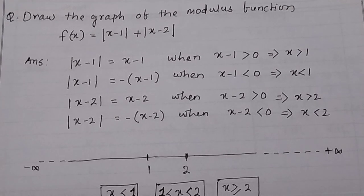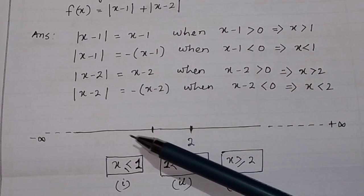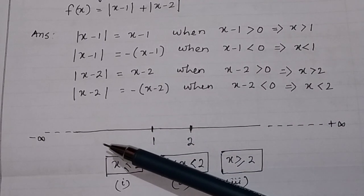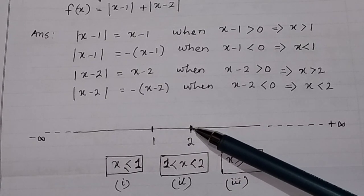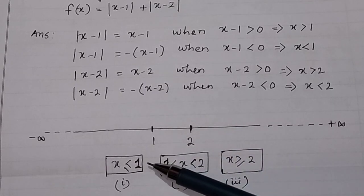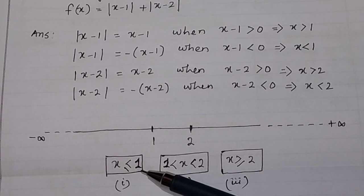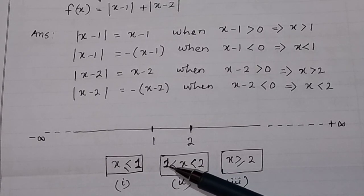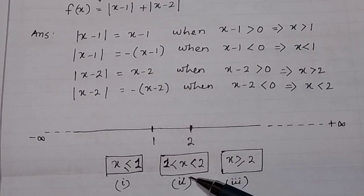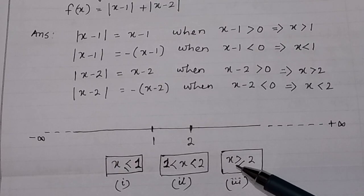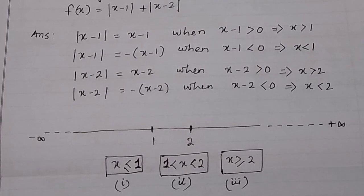So we will get three equations. On the number line from minus infinity to plus infinity, this is the point 1 and this is the point 2. When x is less than or equal to 1, you will have one equation. When x lies between 1 and 2, you will have another equation. And when x is greater than 2, you will have the third equation.